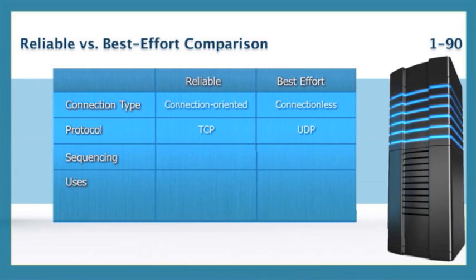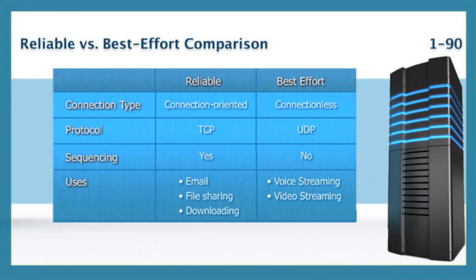UDP, on the other hand, is connectionless — it would be like dropping a postcard in the mail. We're not setting up a connection; there are no mechanisms to ensure reliable communications. Transmission Control Protocol cares whether segments arrive in order; UDP does not. TCP is used in email, FTP, and web surfing, while UDP tends to be used in voice and video streaming.